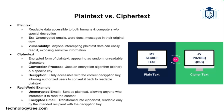To understand encryption we need to start with the basics: plain text versus ciphertext. Plain text is data that is readable by humans and computers without any special decryption or decoding. Examples include emails, word documents, and messages before they are encrypted. Ciphertext is the result of encrypting plain text — it appears as a jumble of seemingly random characters. An encryption algorithm or cipher and a key are used to convert plain text into ciphertext.